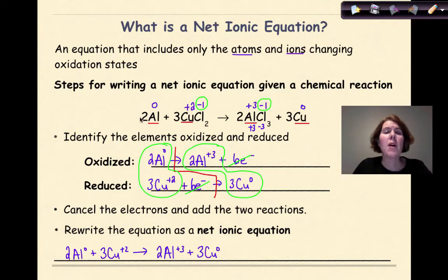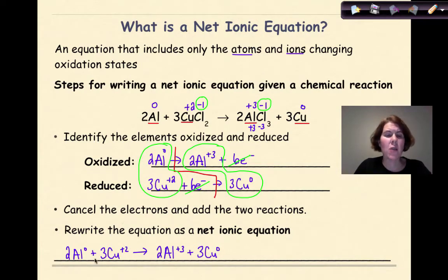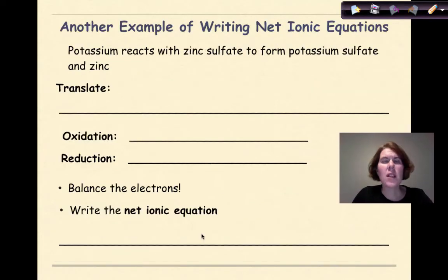Starting from the top: we had a general chemical reaction, we assigned oxidation numbers, we identified what was being oxidized and what was being reduced, we added in our stair step, we canceled our electrons, and we finally wrote our full net ionic equation at the bottom.